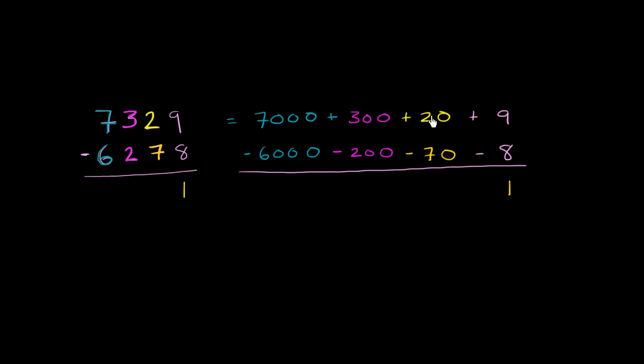The most natural place to go is one place value above. So we could take 100 from the 300, so it will become 200. We're going to give that 100 to the tens place, so it is going to become 120. Notice 200 plus 120 is 320. 300 plus 20 is 320. We have not changed the value of the number, we've just changed what place we're representing it in.